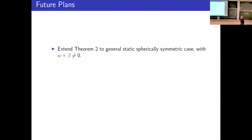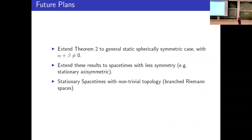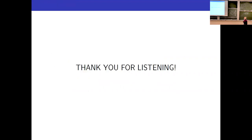Future plans: we would like to extend these results. Not all spherically symmetric solutions work — there is a relationship between the coefficients that must hold, and we haven't handled the general case yet. One should be able to get rid of symmetry completely, perhaps in stages by first looking at less symmetric situations. Another interesting direction — which I don't have time to discuss — is to look at spaces with non-trivial topology, connected to the quantum aspects of the problem. Of course, one needs to do this for an arbitrary number of point charges. Thank you very much for listening.